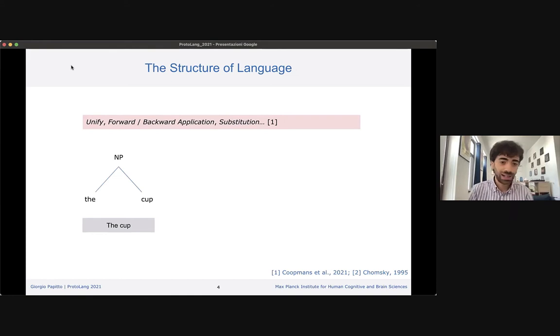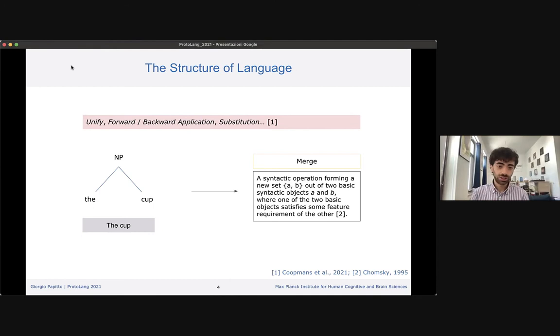The process of binding elements together in language was defined in many ways: unify, forward-backward application, substitution. According to the minimalist thesis, this process is called merge. Merge is a syntactic operation forming a new set out of two basic syntactic objects, where these objects need to fulfill some requirements to be bounded together. Merge can be applied recursively to form syntactic hierarchies. I can say 'the cup', but I can also apply merge again to say 'the cup on the table' and so forth.